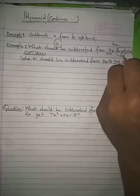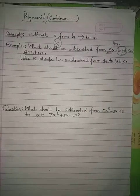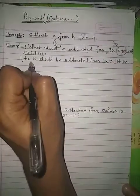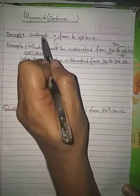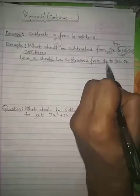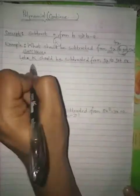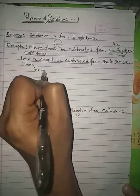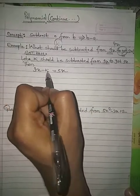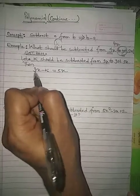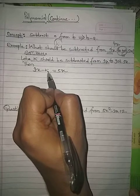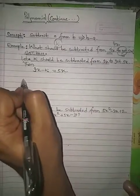Always treat 'to get' as an equal sign. So the equation becomes: K should be subtracted from 9x equals 5x. Using the concept 'subtract A from B implies B minus A', subtracting K from 9x gives us 9x minus K equals 5x. Here K is subtracted from 9x to get 5x.